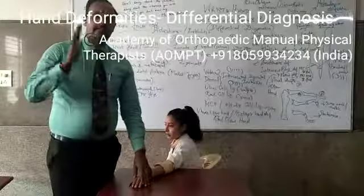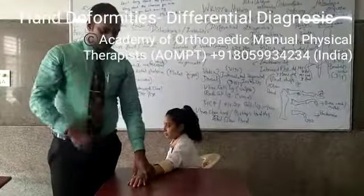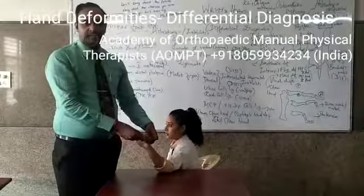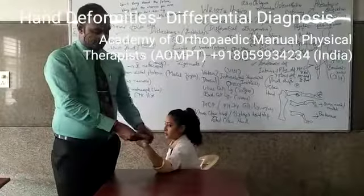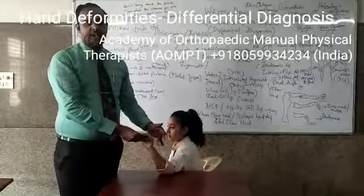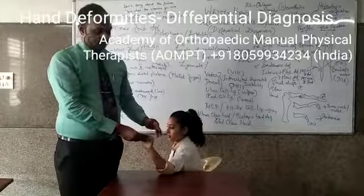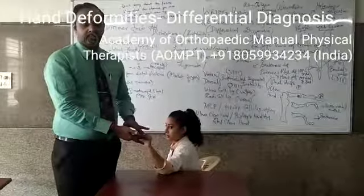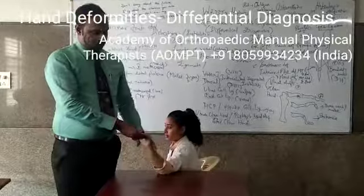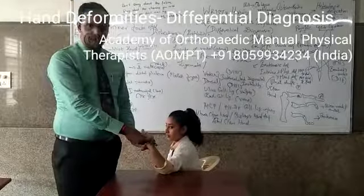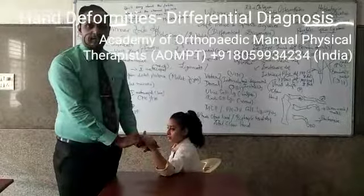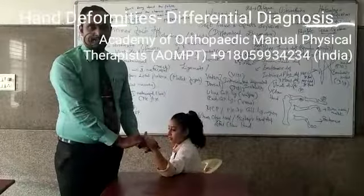Next, coming to the fingers — you have intrinsic plus deformity. Intrinsic plus is the action of the intrinsic muscles: the lumbricals and the interossei. The MCP is flexed at 90 degrees, and the IP joints are extended. In the same position, it can go into ulnar drift where all the fingers are deviated towards the medial side.